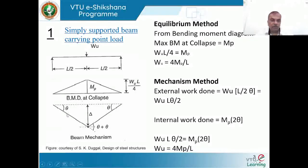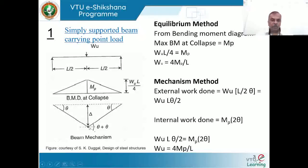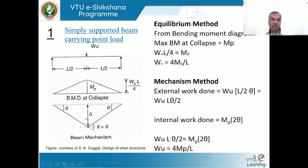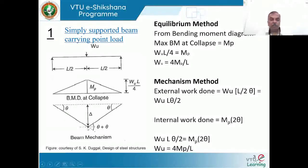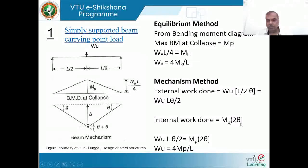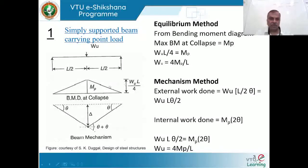Since deformations are very small, the horizontal distance L/2 and the displaced length are assumed equal, giving δ = (L/2)θ. External work = WLθ/2. Internal work = mp·2θ. Equating external and internal work: WLθ/2 = mp·2θ, giving W = 4mp/L — the same result as the static method based on the bending moment diagram.